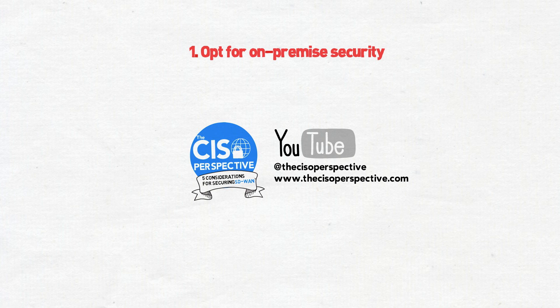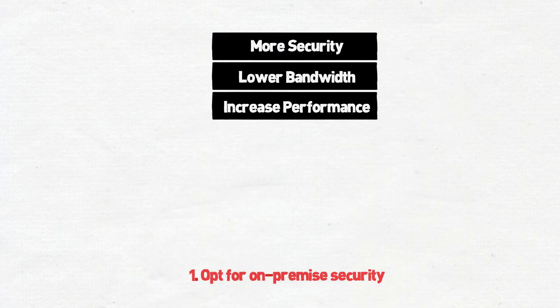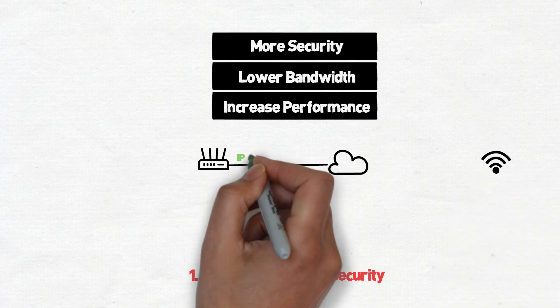Number one, opt for on-premise security whenever possible. From a security perspective, on-premise security is always preferred over the cloud for a number of reasons. Not only does it provide additional services that a cloud-based solution doesn't offer, but it also lowers your bandwidth costs and increases performance at the edge.